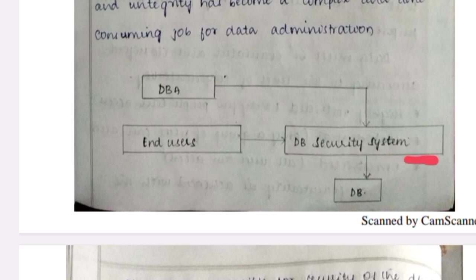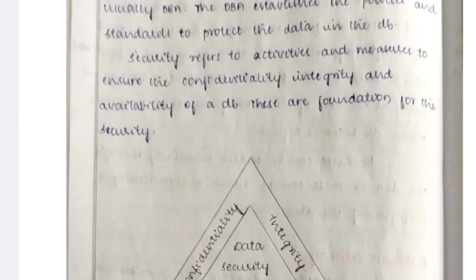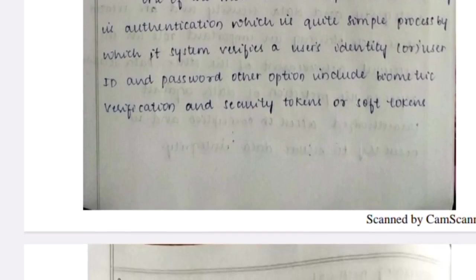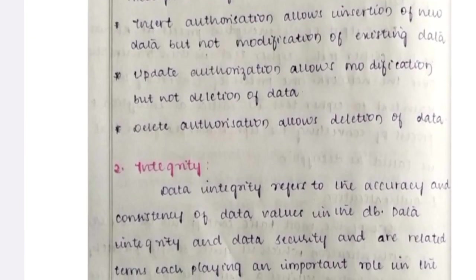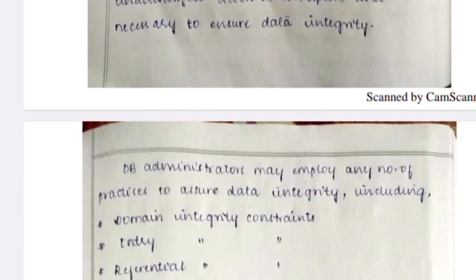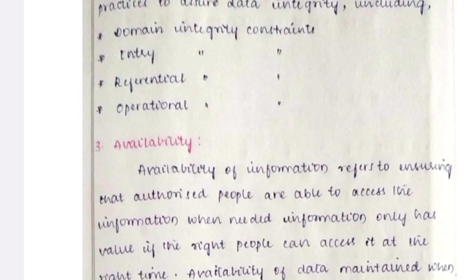For database security, there is a diagram showing end-users, the database security system, and the database — no one can directly access the database. After drawing the diagram you need to explain: Authentication means verifying whether a user is a valid person. Authorization means checking whether the person is authorized to perform actions. Integrity means data accuracy. Availability means measuring whether authorized people are able to access the information.